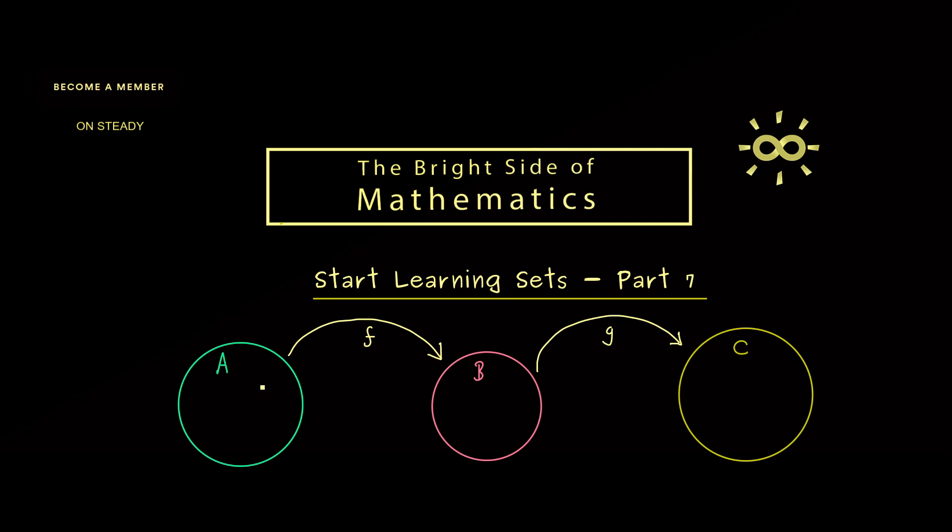However this means for an element A you can apply both maps. First you apply F and then you apply G. And the result is then a map from A into C.